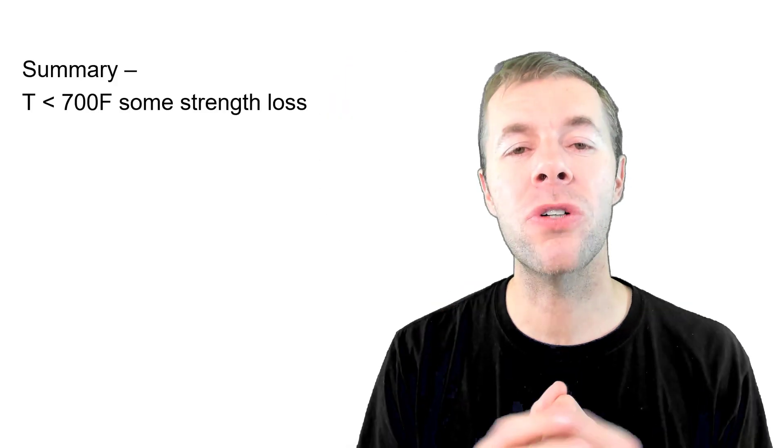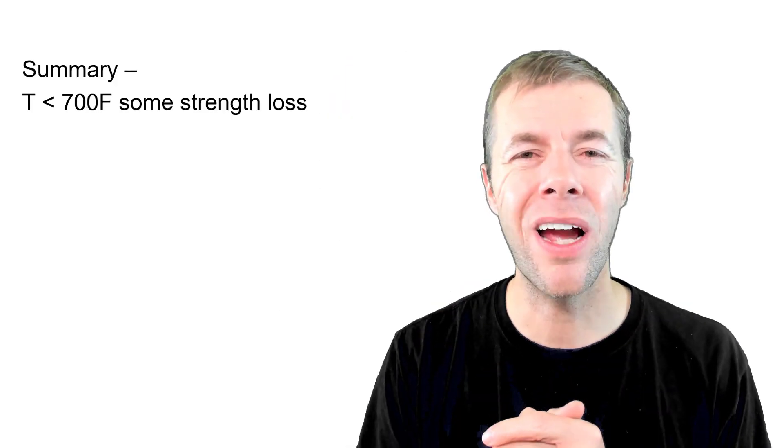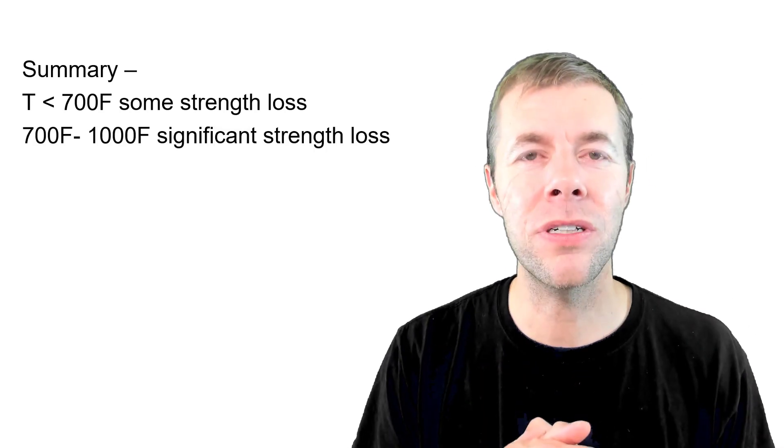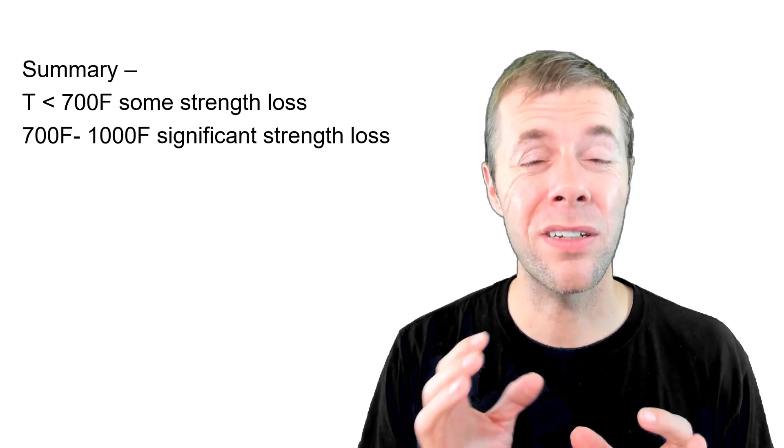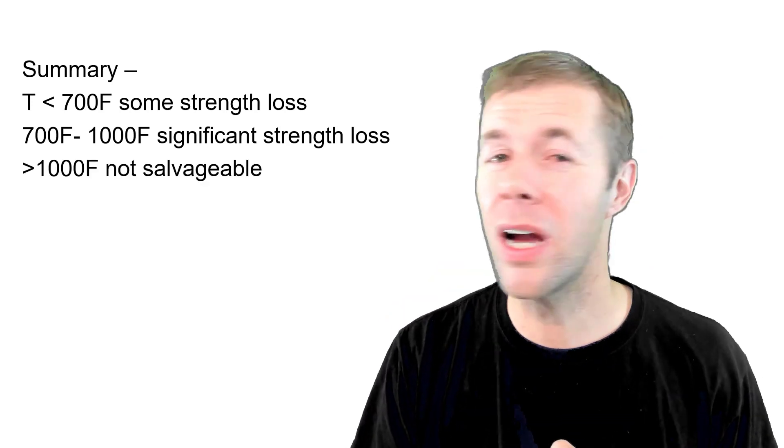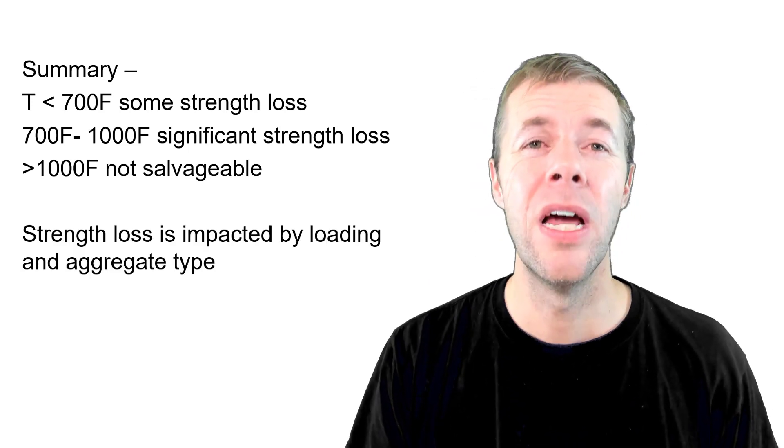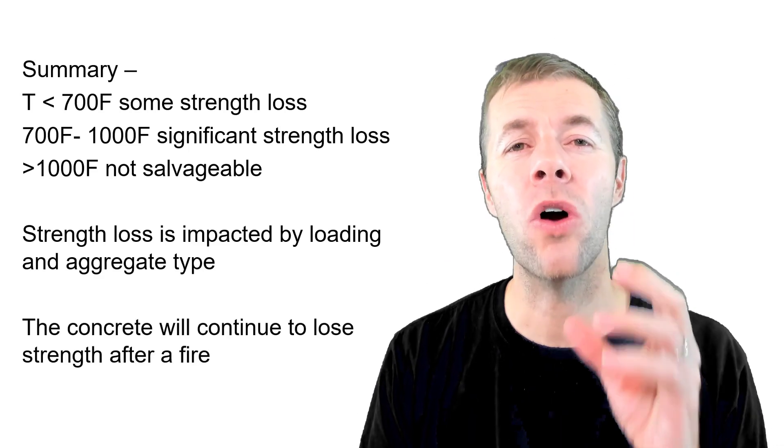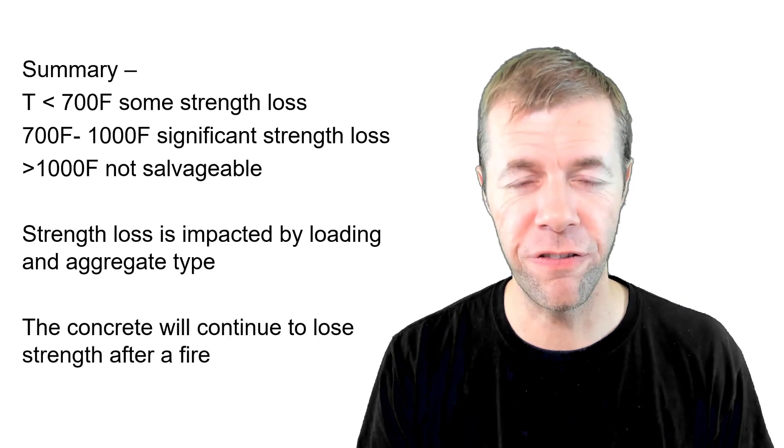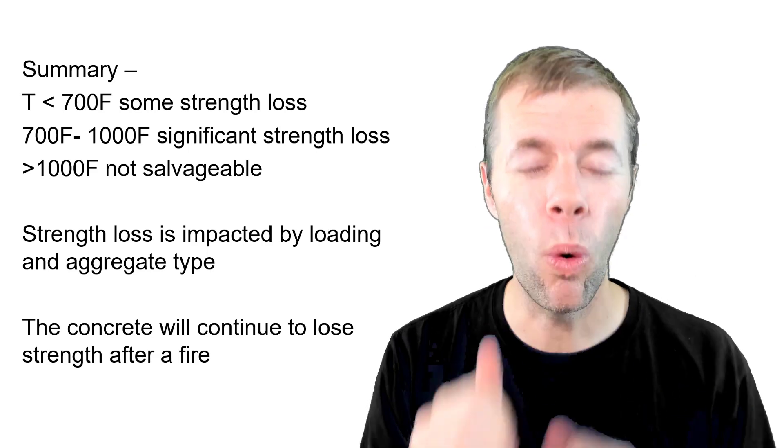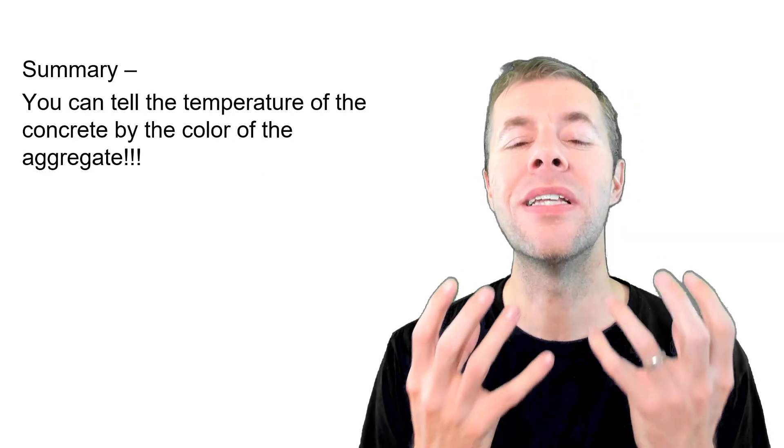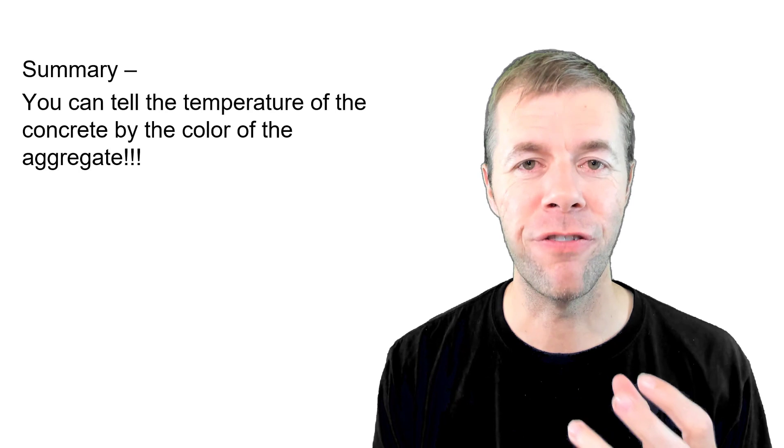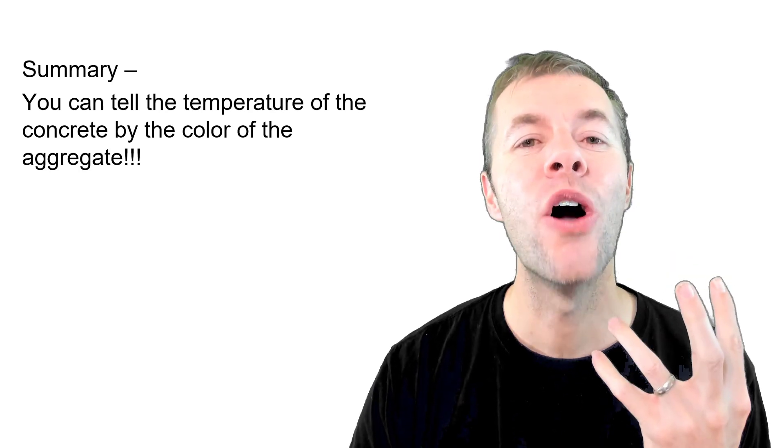So in summary, if your temperatures are less than about 700 degrees Fahrenheit you get some strength loss but it's not that big of a deal. When you get to 700 to 1000 you start to get a lot more strength loss typically. And when you get above a thousand degrees Fahrenheit your concrete's not salvageable. And then your strength loss is impacted by the loading and the aggregate type. And the concrete is going to continue to lose strength after a fire. As it cools those cracks are going to get wider and wider. And you can tell the temperature of the concrete by the color of the aggregate after the fire. An awesome, crazy useful tool.